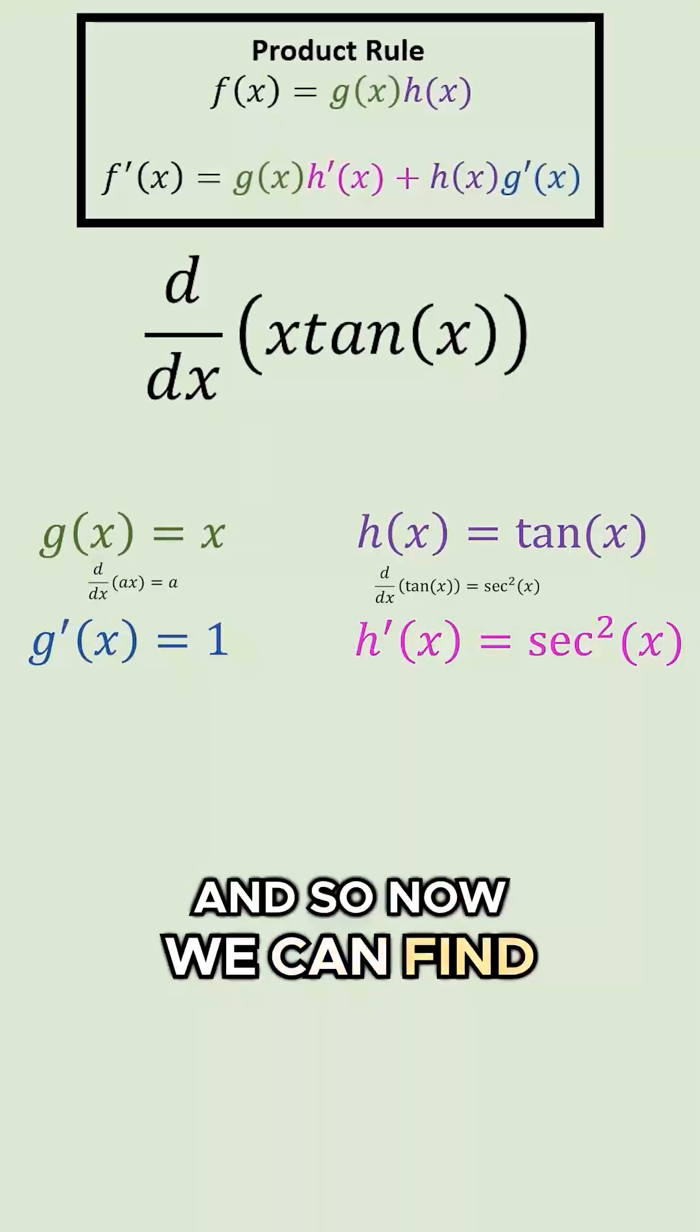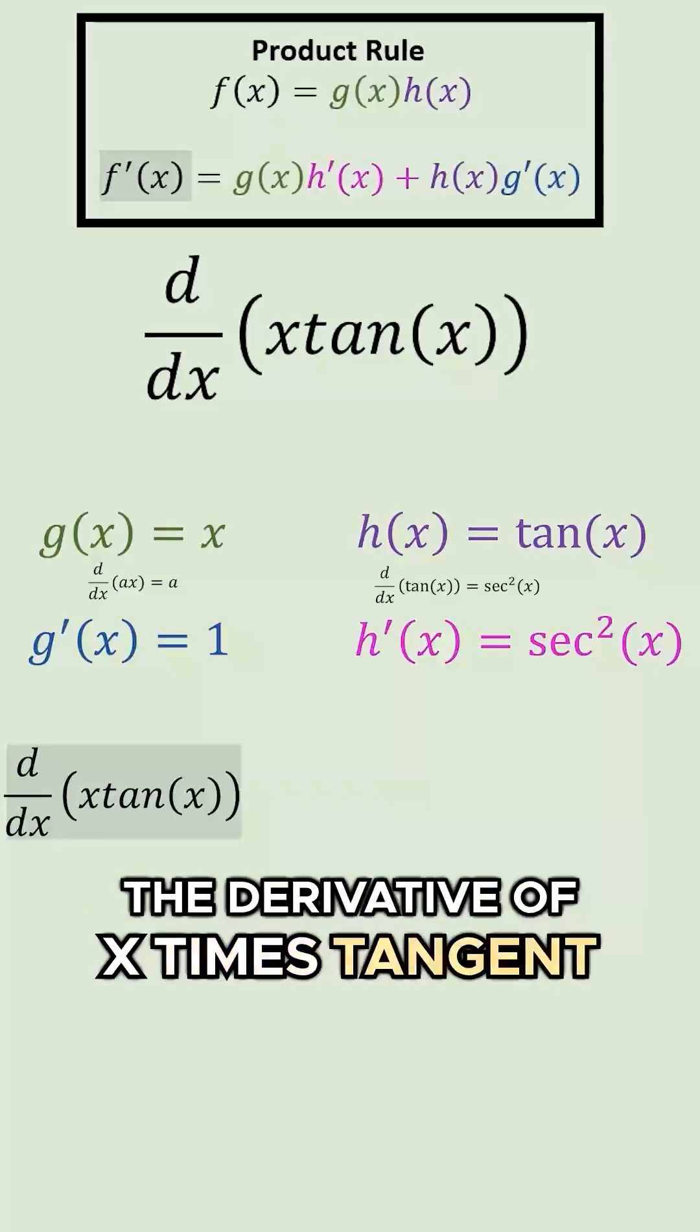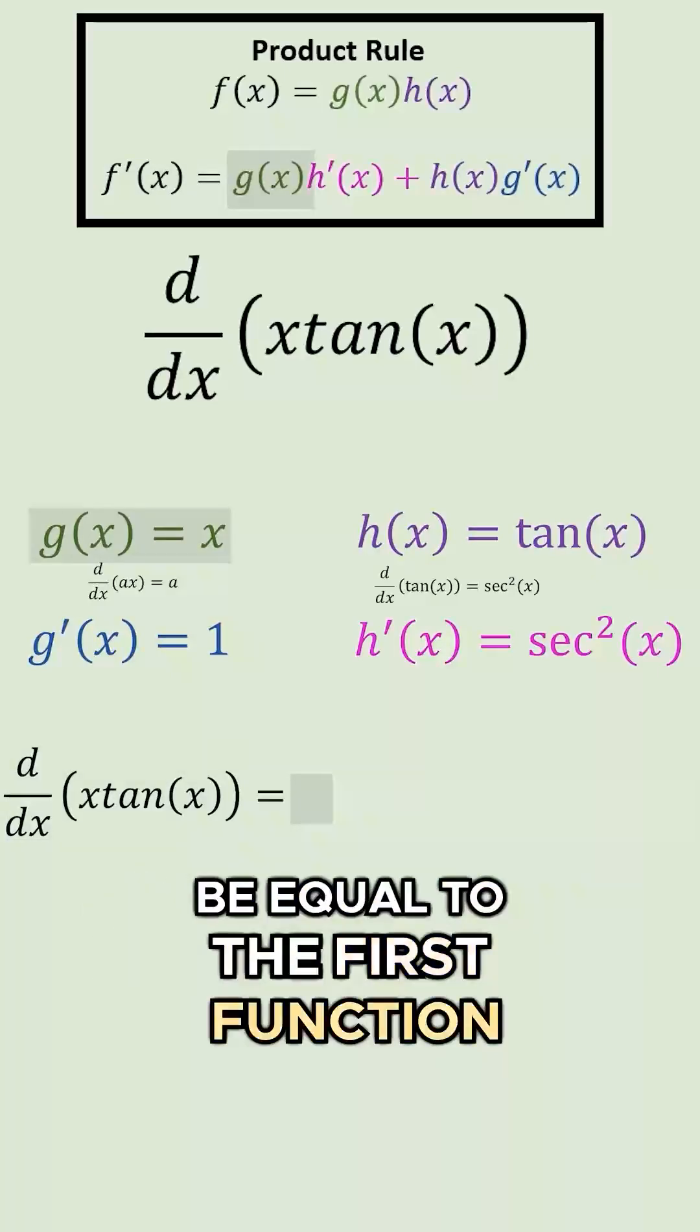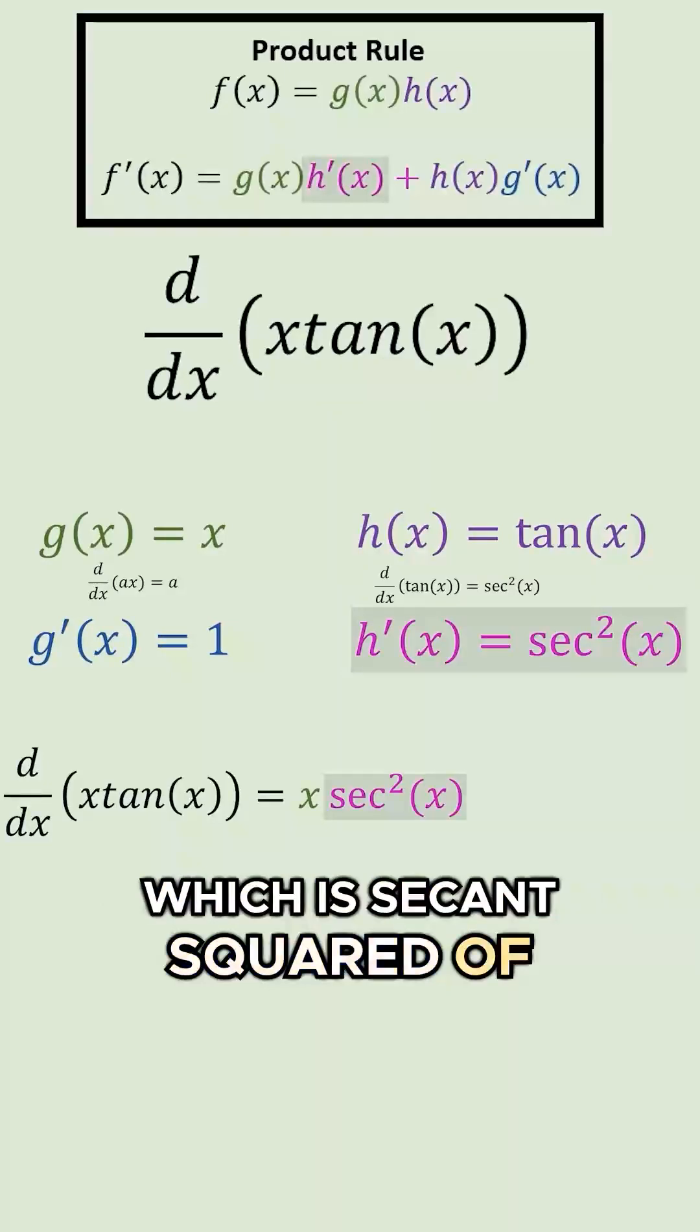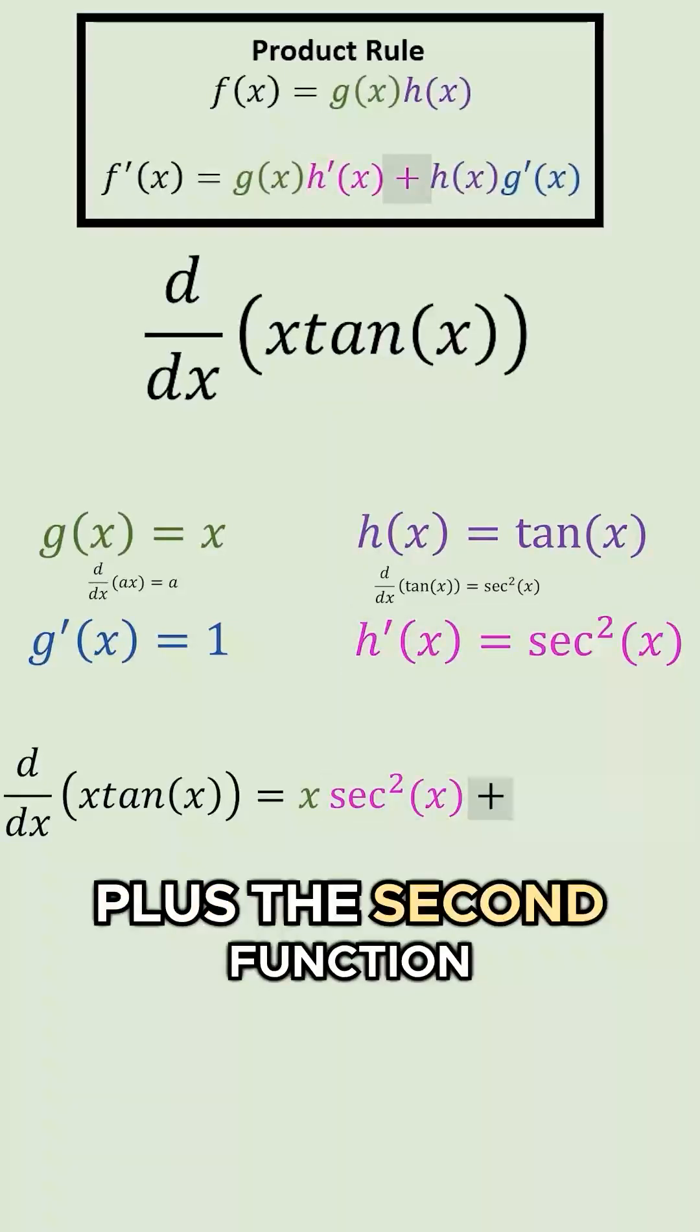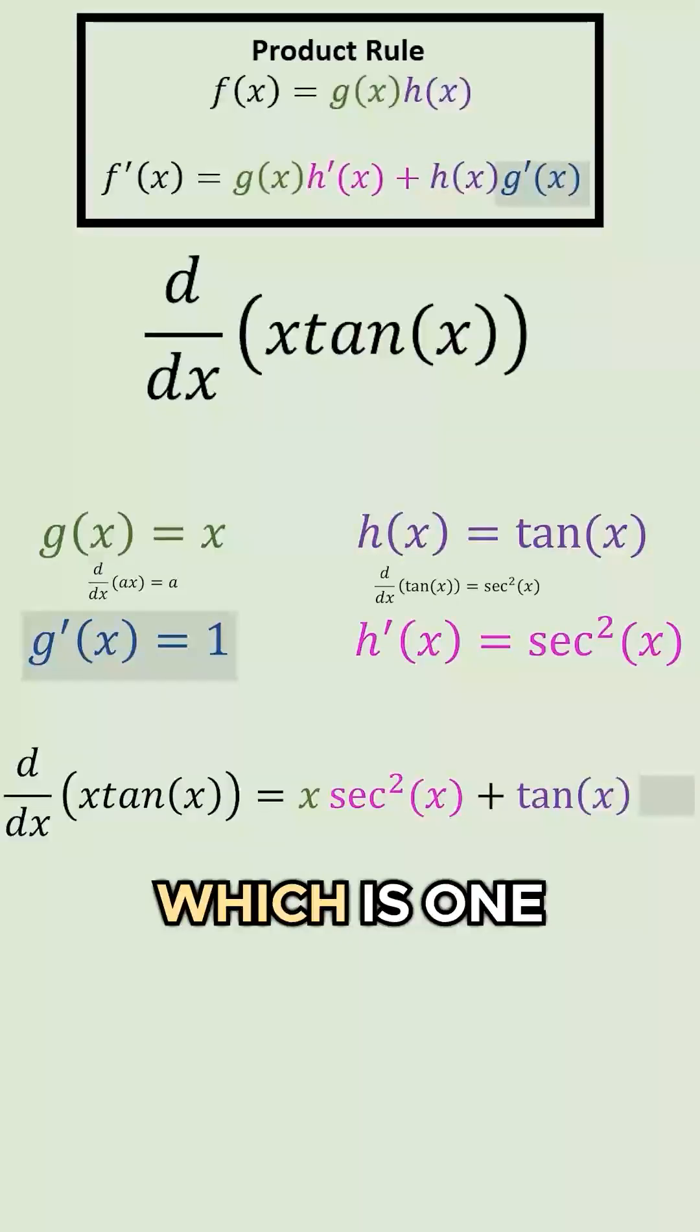And so, now we can find the derivative of our function. In other words, the derivative of x times tangent of x is going to be equal to the first function, which is x, times the derivative of the second function, which is secant squared of x, plus the second function, which is tangent of x, times the derivative of the first function, which is 1.